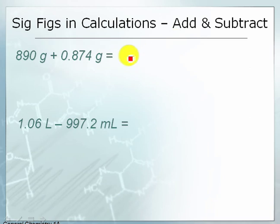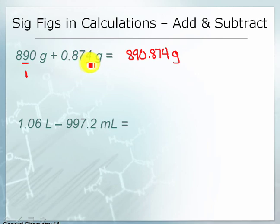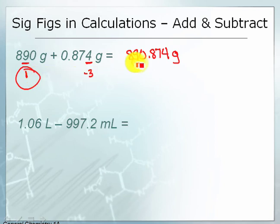Here's another one that can be tricky. If we plug this into our calculator, we get 890.874 grams. We need to look at our uncertainty to determine where it rounds. The first uncertain figure here comes in the tens place, or 10 to the 1. And in the other number, the first uncertain figure — which is the last significant figure — is 10 to the minus 3, in that thousandths place. This is the largest source of uncertainty and will determine the uncertainty in our answer, which falls in the tens place. So this number should be rounded back to 890 grams.